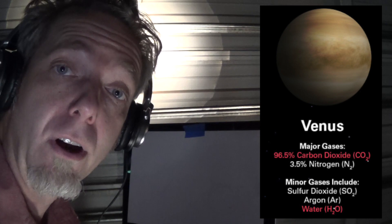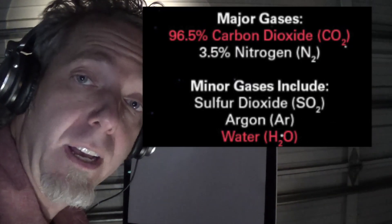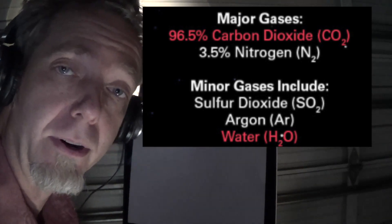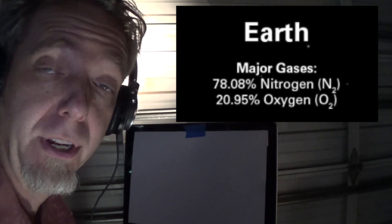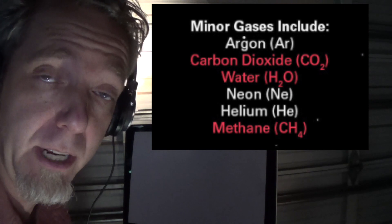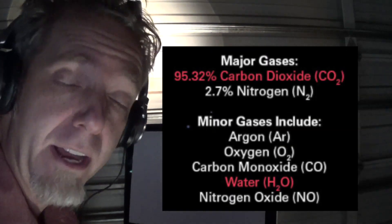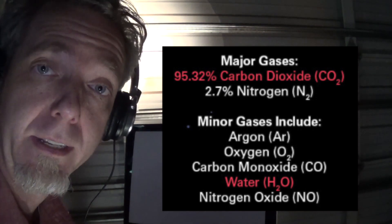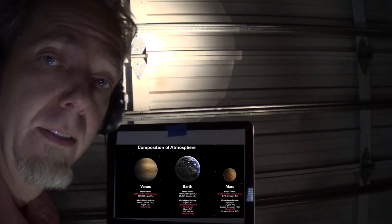The major gases of Venus are carbon dioxide and nitrogen. The minor gases of Venus are sulfur dioxide, argon, and water vapor. The major gases of Earth's atmosphere are nitrogen, which we have the most of, and oxygen, which we really need. The minor gases of Earth's atmosphere include carbon dioxide, argon, water vapor, neon, helium, and methane. For Mars, the major gases are carbon dioxide and nitrogen. Minor gases include argon, carbon monoxide, nitrogen, oxygen, and nitrogen dioxide.